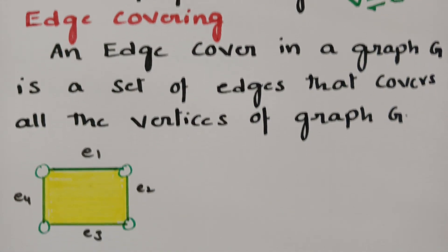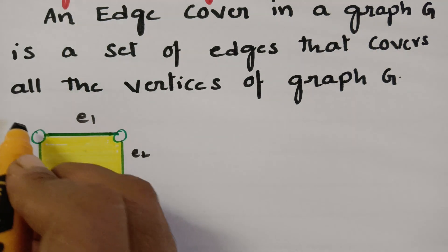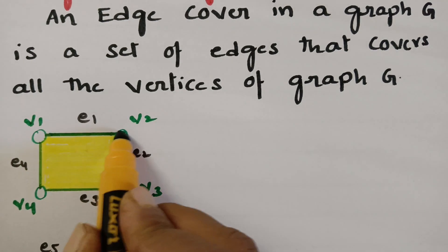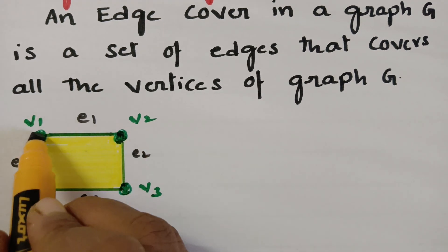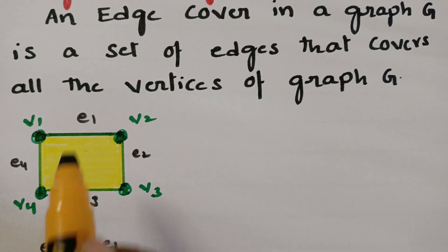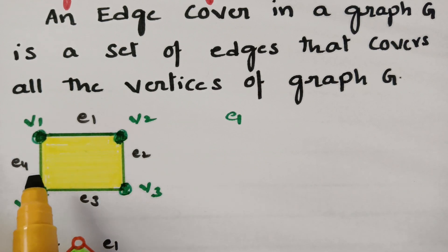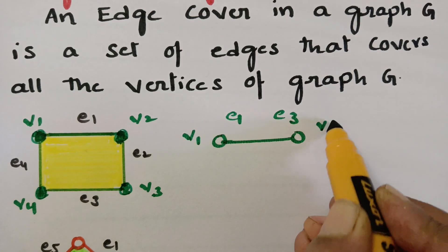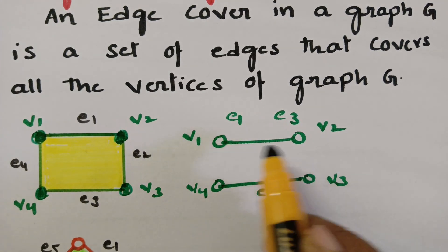Let's get started with a few examples. This is graph G with edges E1, E2, E3, and E4, and vertices V1, V2, V3, and V4. For the edge cover we need to cover all these vertices by selecting a few edges. I will select E1 and E3. E1 has vertices V1 and V2, and E3 has vertices V3 and V4, so all four vertices are covered.